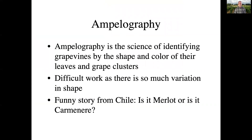The science of identifying grapevines by leaf shape and by the color of the grape clusters and the shape and size of the grape clusters is known as Ampelography. This is very difficult work to do because there's so much variation in varieties and cultivars, and even on a single plant you can see variation in leaf shape just on a single shoot from the bottom to the top, which makes it very hard to identify.